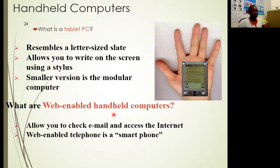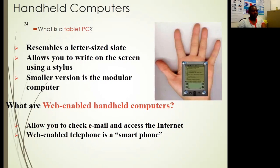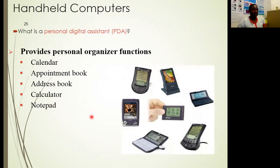We also have Android devices or tablets — many people might have used them, and you can write on the screen. Then there are web-enabled devices which allow you to check your emails and access the internet, and these also come in the form of smartphones, which are very popular these days. There's also the PDA — personal digital assistant — normally used in businesses, providing personal organizing functions. Some call them organizers, as they include a calendar, appointment book, address book, a calculator, and so on, replacing paperwork and diaries.